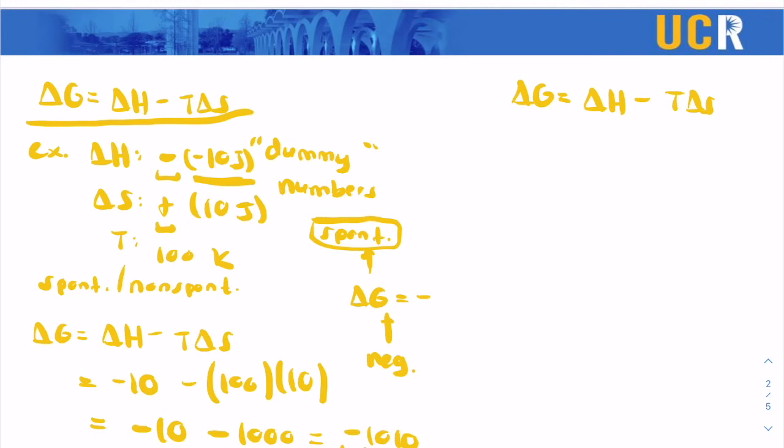So let's try another example. Let's say delta H positive, delta S is negative, and they don't give us a T. And the question again is, is this spontaneous or non-spontaneous conditions? So we're going to use this equation we just used earlier. Delta G equals delta H minus T delta S. So let's use dummy numbers.